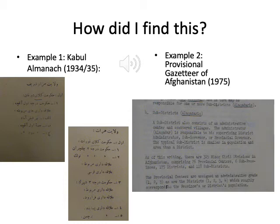And there you could see the institutional divisions of the Afghan state as they developed over time. Here you can see examples of Vilayat Mazar-i Sharif and Vilayat-i Herat — the province of Mazar-i Sharif and the province of Herat — and their subdivisions, which I could count.